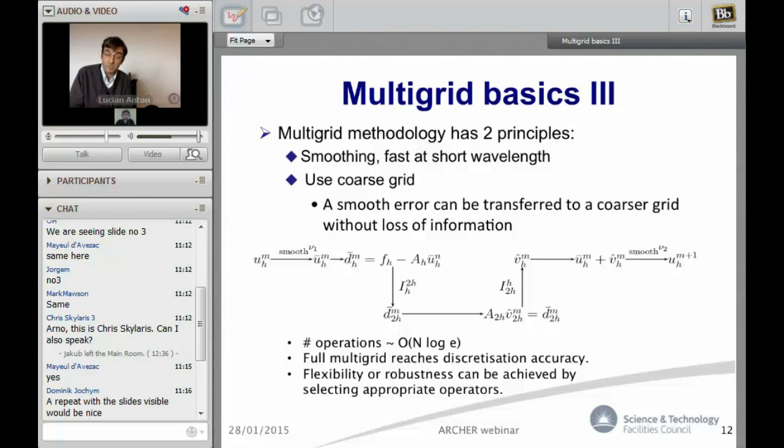It scales linearly. A full multigrid scheme which has a certain pattern of doing this transition between different grids can reach the discretization accuracy. So it's as good as a direct method. What I like to point here is that there are a number of new entities like restriction, prolongation, I_H2H, and the equation of the coarser grid.